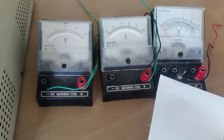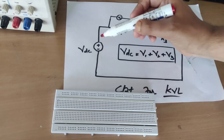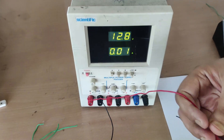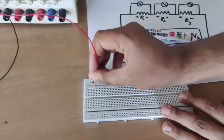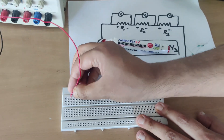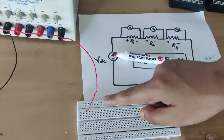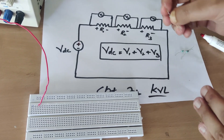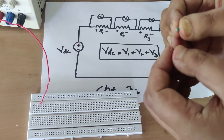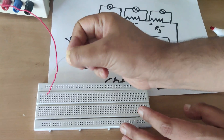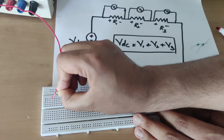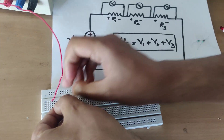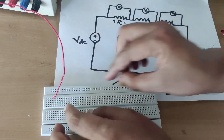We have three voltmeters here whose range is 20 volts or 10 volts — whatever the drop is, it will be shown. Now we are going to build this circuit on the breadboard. First, take the positive terminal of the DC supply and connect it to the breadboard. You can see the previous video where I showed how to use the breadboard. The positive wire is now connected to one terminal of resistor R1. As you know, the breadboard is shorted vertically, so one terminal of R1 connects here and the other terminal connects somewhere else.